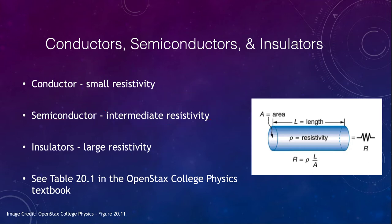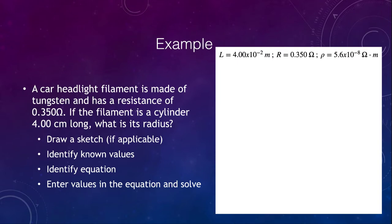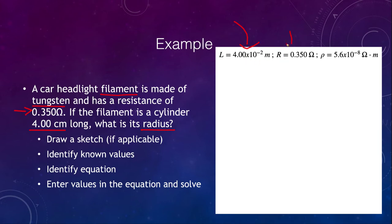Let's do an example calculation. We have a car headlight filament made of tungsten with a resistance of 0.350 ohms. The filament is a cylinder four centimeters long, and we want to find its radius. We consider this as an approximation since filaments are sometimes wound into coils. What we know: the length is 4 cm or 4×10⁻² meters, the resistance is 0.350 ohms, and the resistivity from the table is 5×10⁻⁸ ohm-meters.